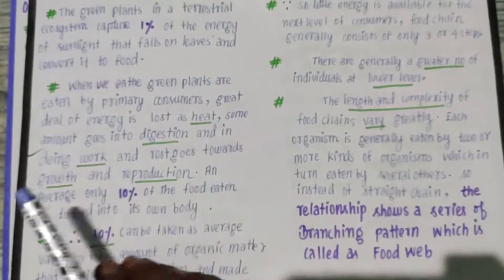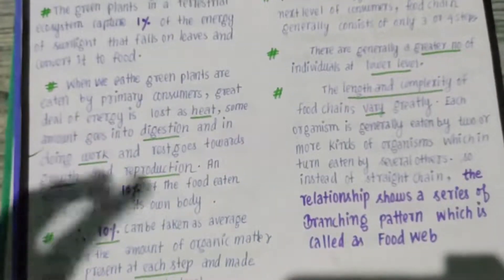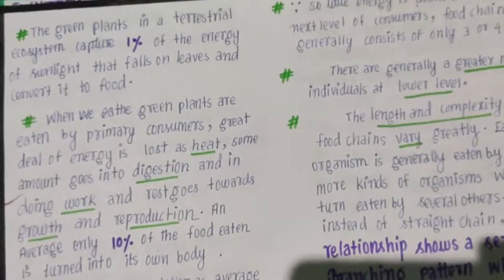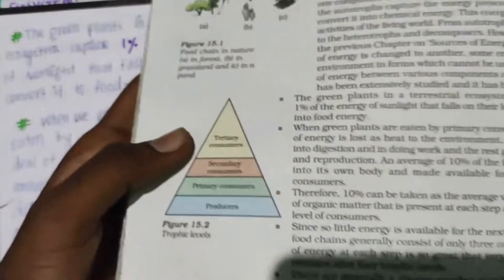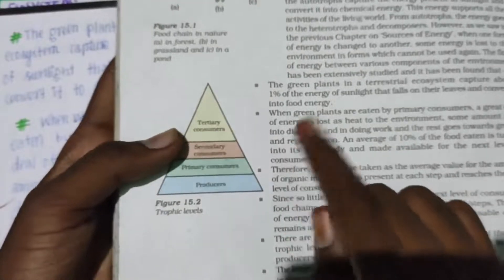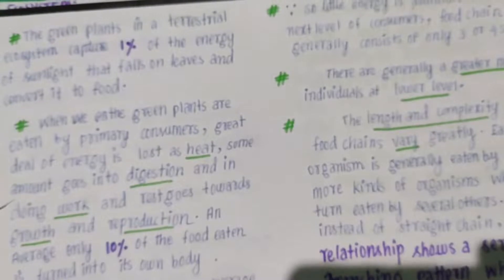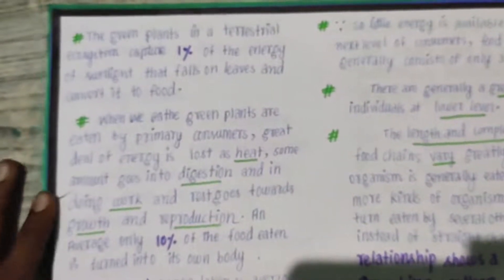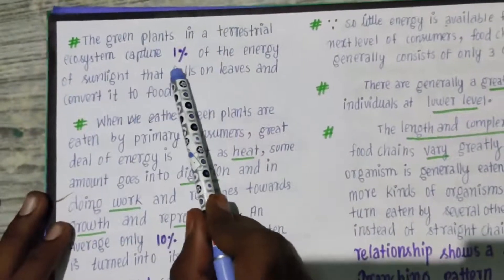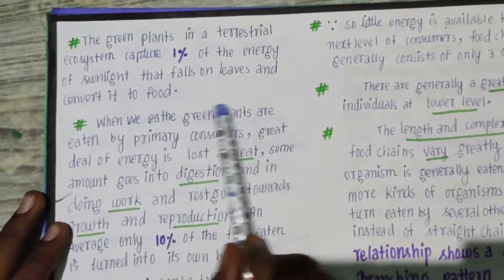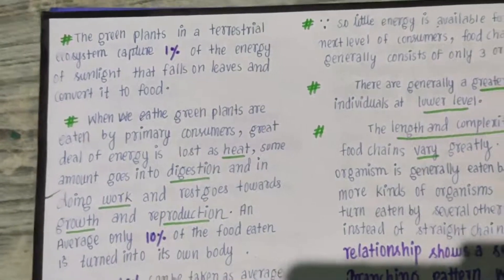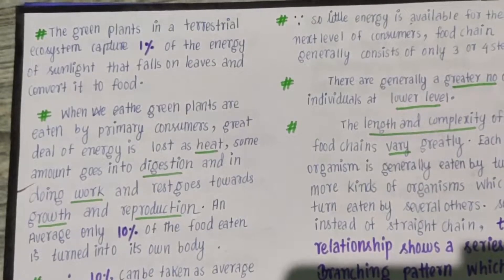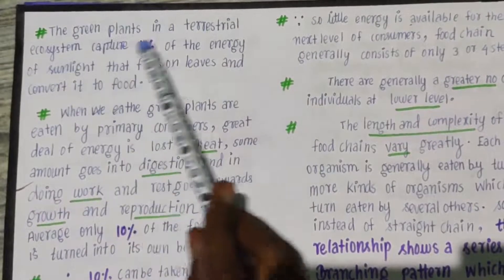Now we are going to discuss some important points regarding the food chain — these are very important. First point: green plants in the terrestrial ecosystem capture only one percent of the energy of sunlight that falls on leaves and convert it to food. Remember this first point — only one percent of sunlight energy is converted to food.